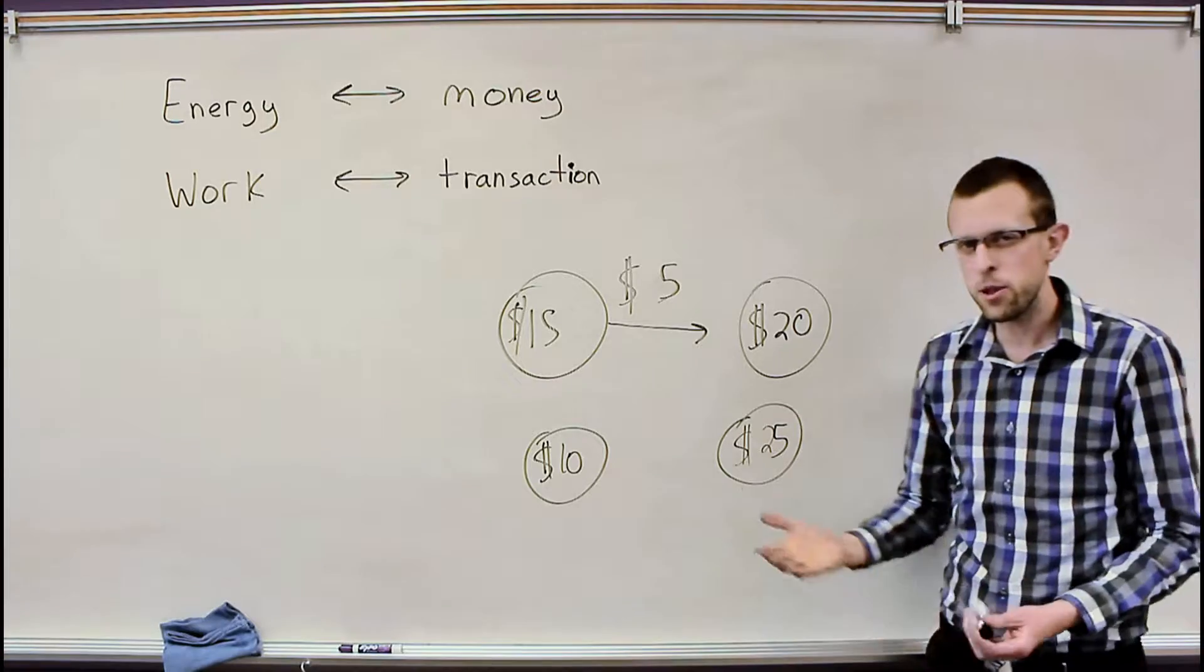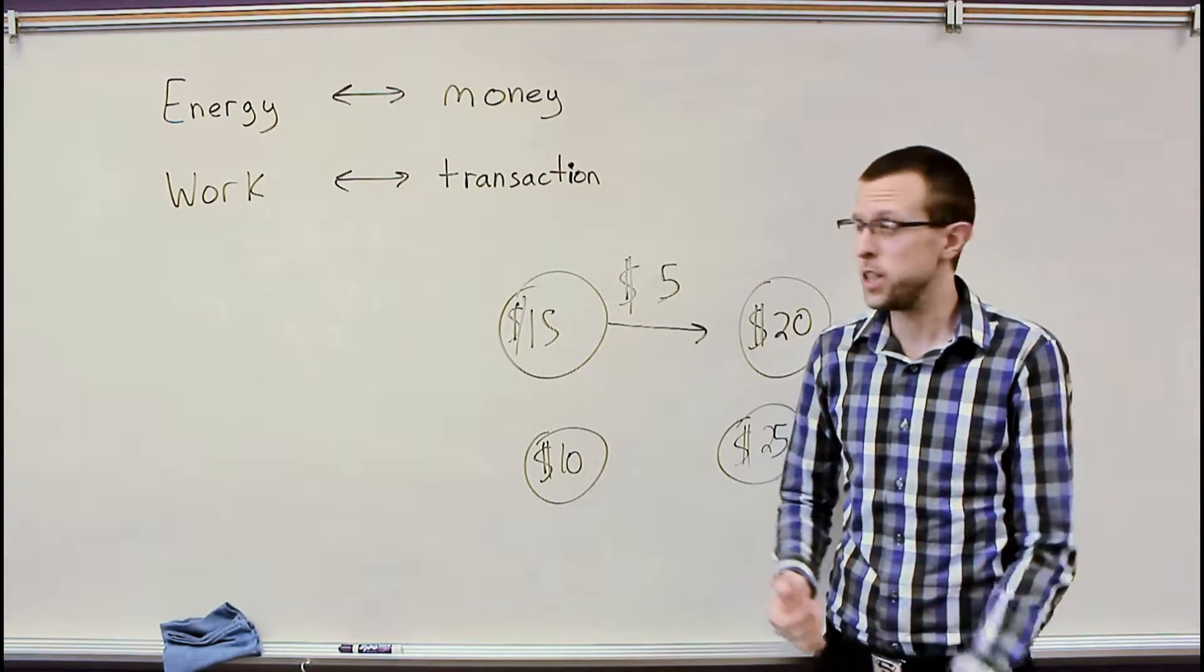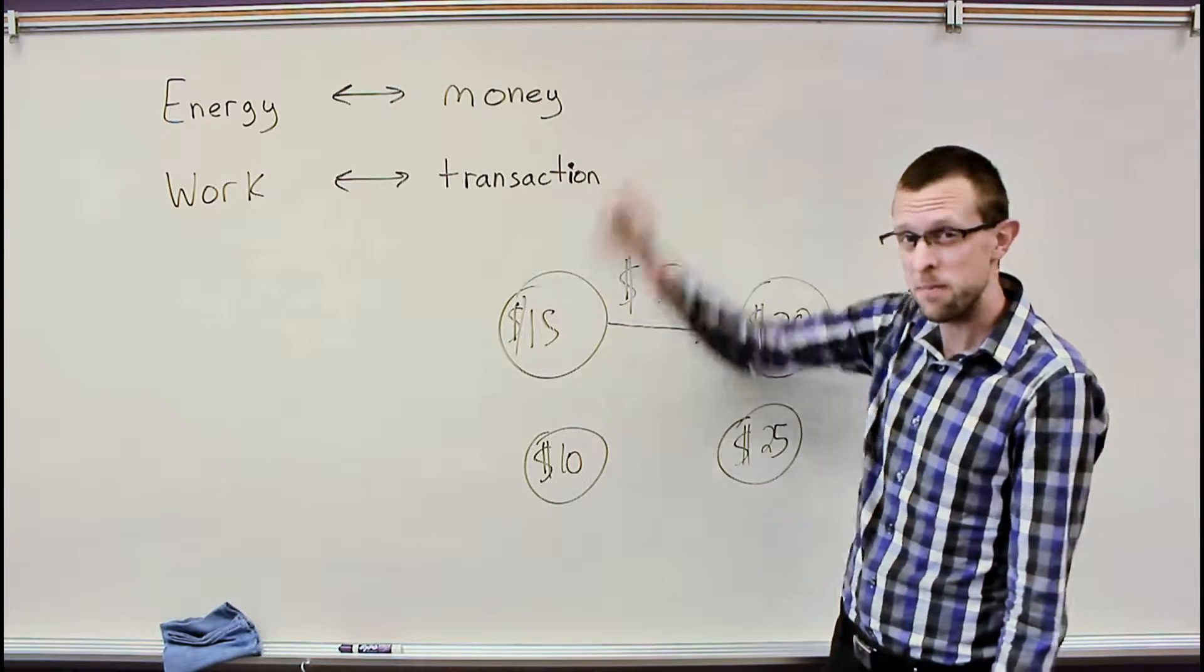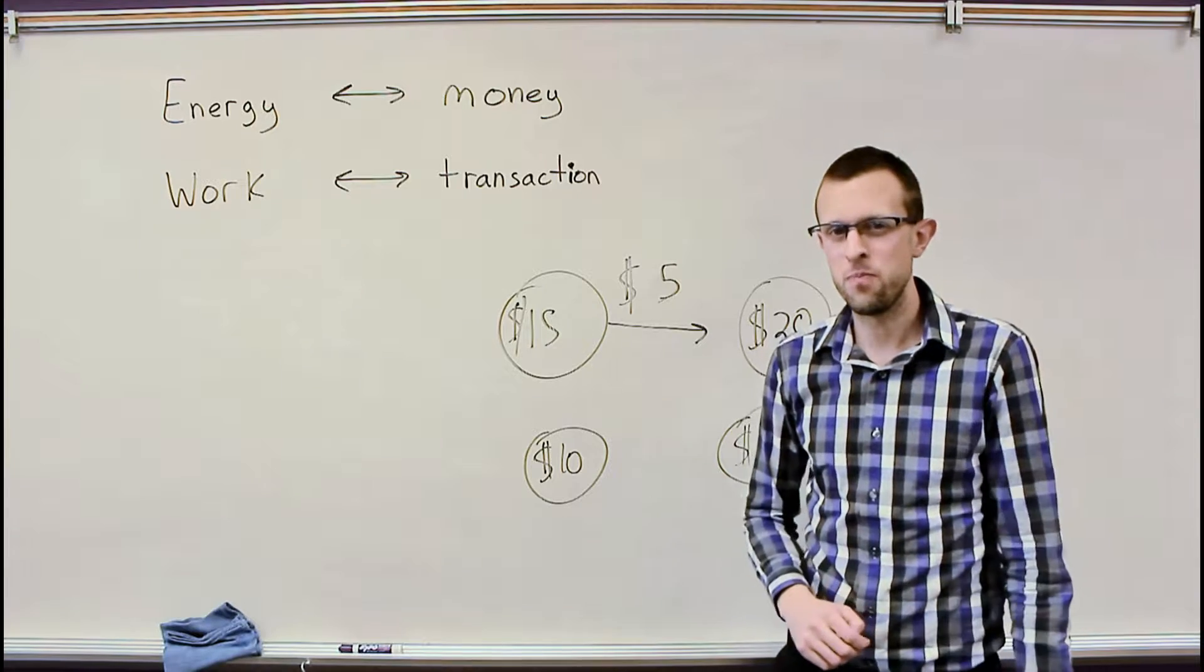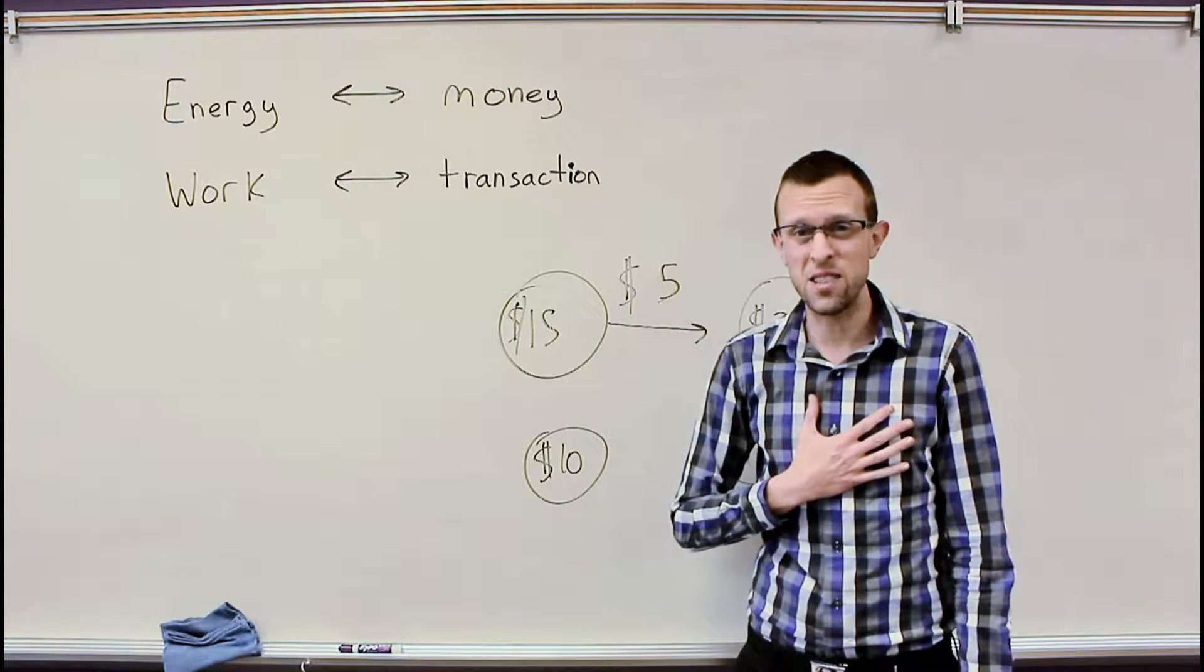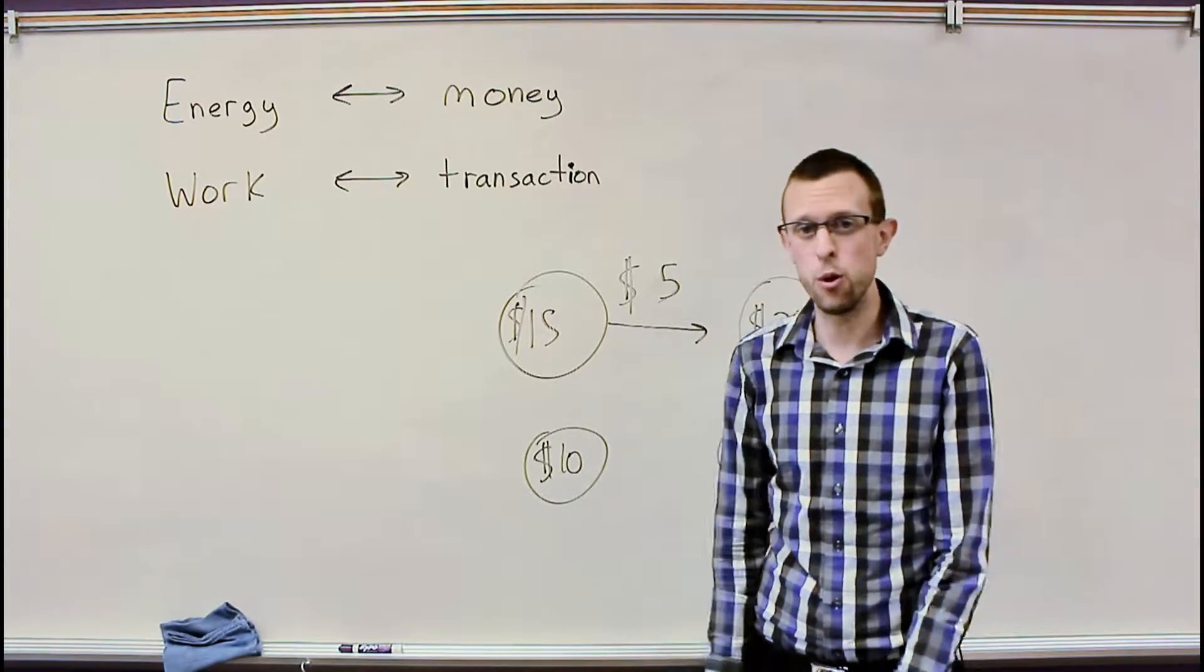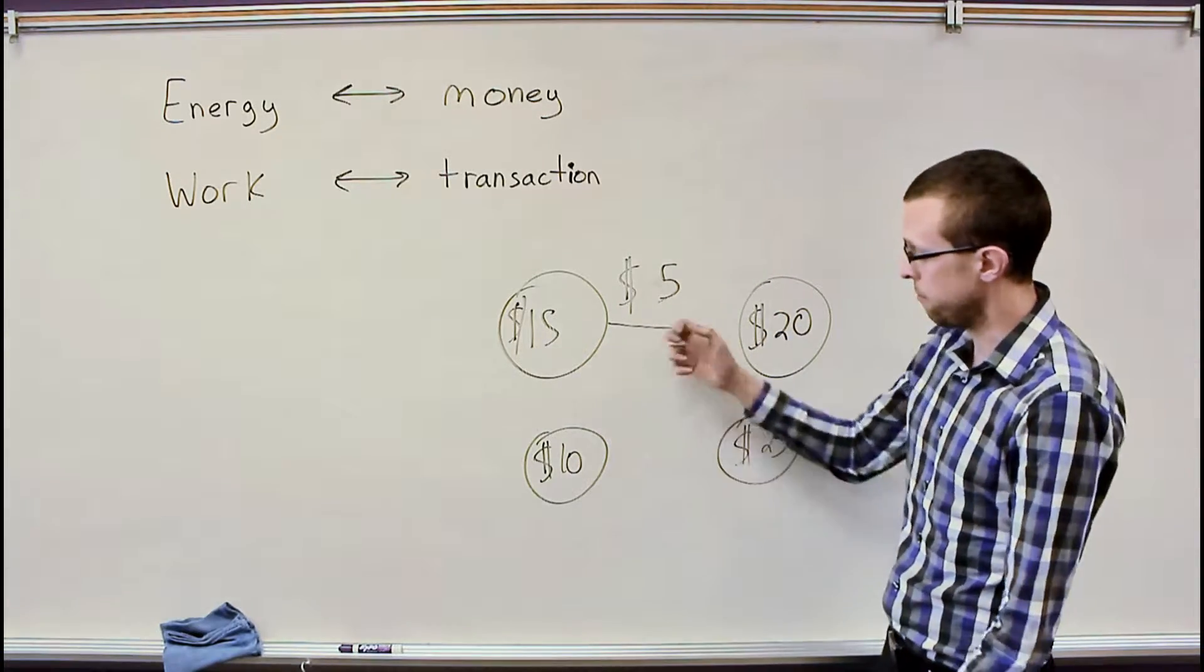All right, now, by the same token, if I had, say, 15 joules of energy, so that's like my money, and you have 20 joules of energy, and then I did work on you in the amount of 5 joules, I would end up with less energy and you would end up with more energy by an amount of 5, 5 joules this time instead of $5.